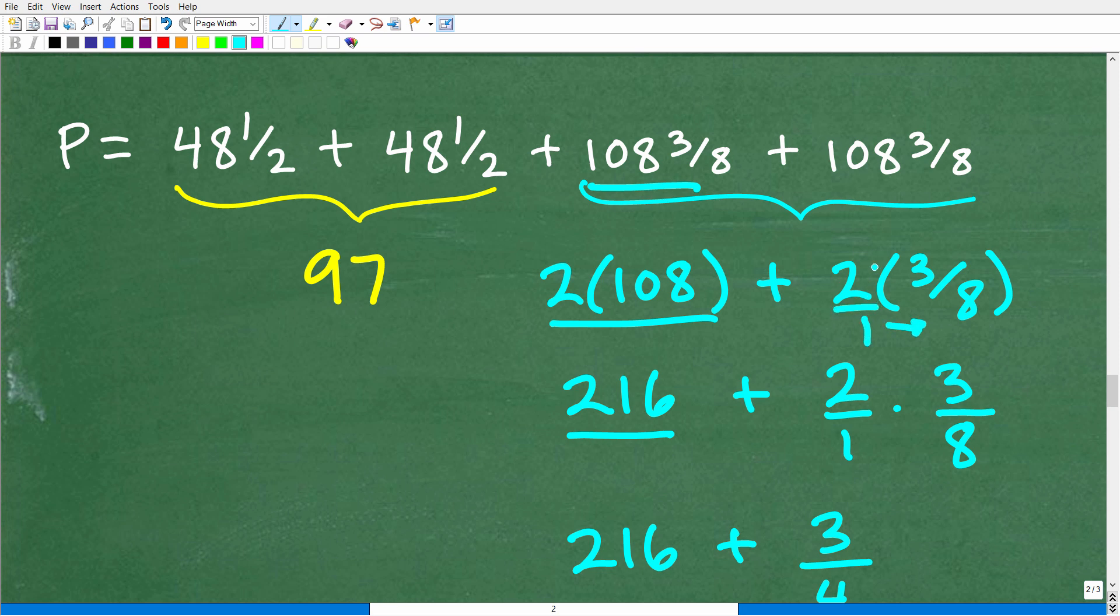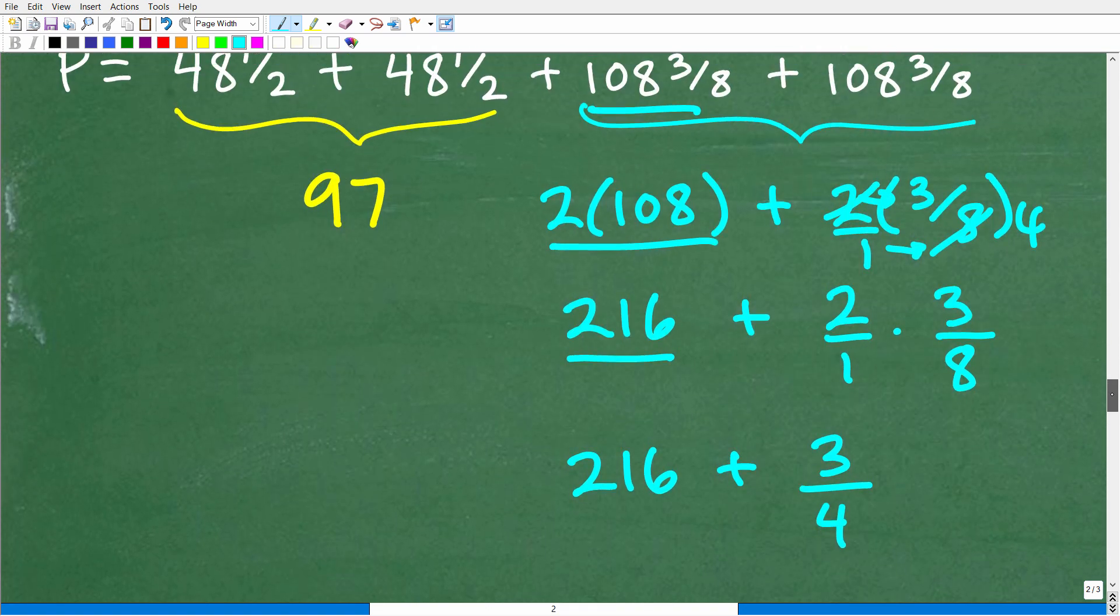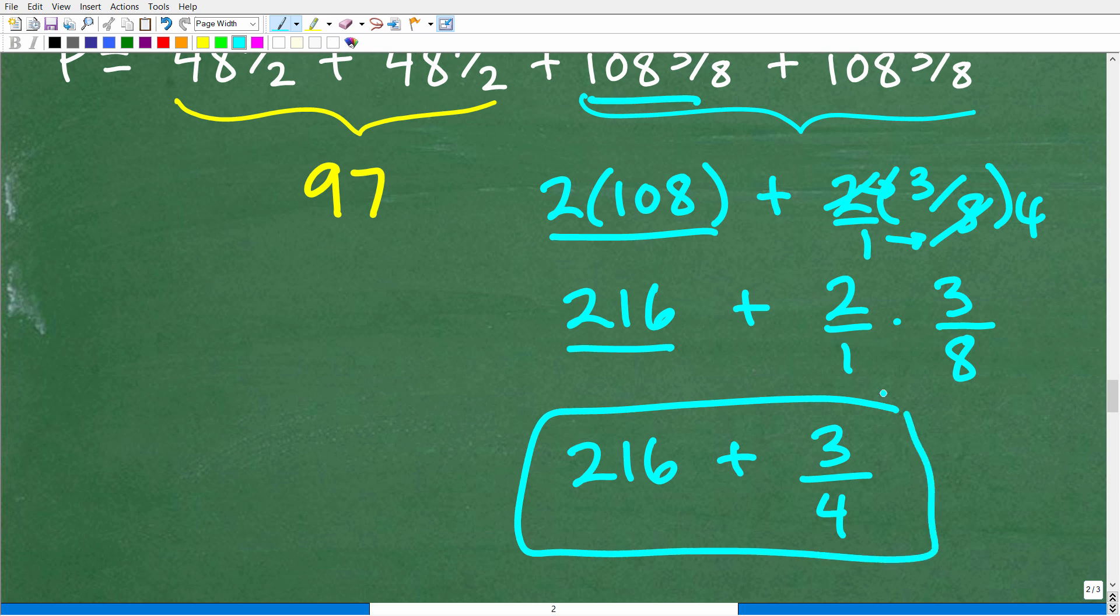Remember, you're going to multiply the respective numerators and denominators. But here you can cross-cancel that 2 with this 8th. So that's going to be 3 4ths. Alright, so now we have 216 plus 3 4ths. And of course, when we add these up, we will have that second group. Alright, so let's go ahead and take the next step.